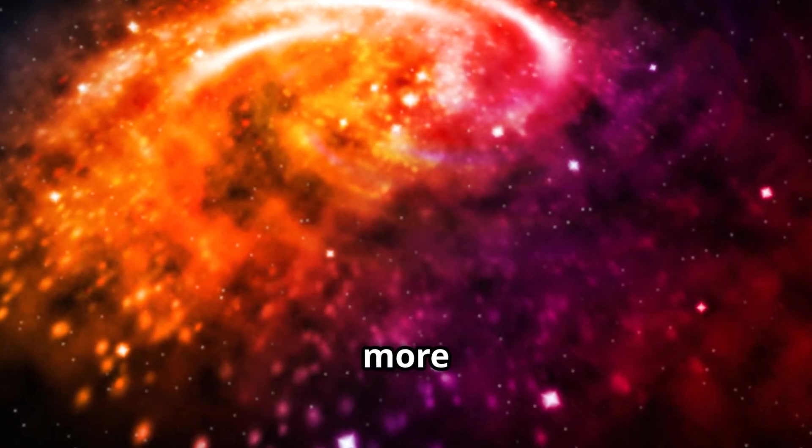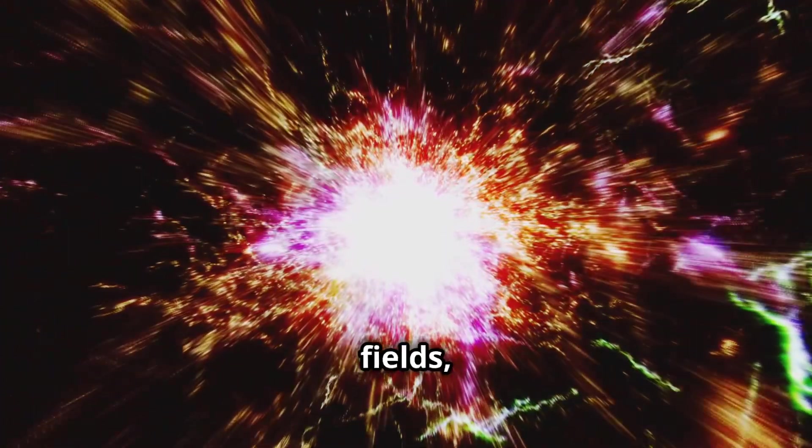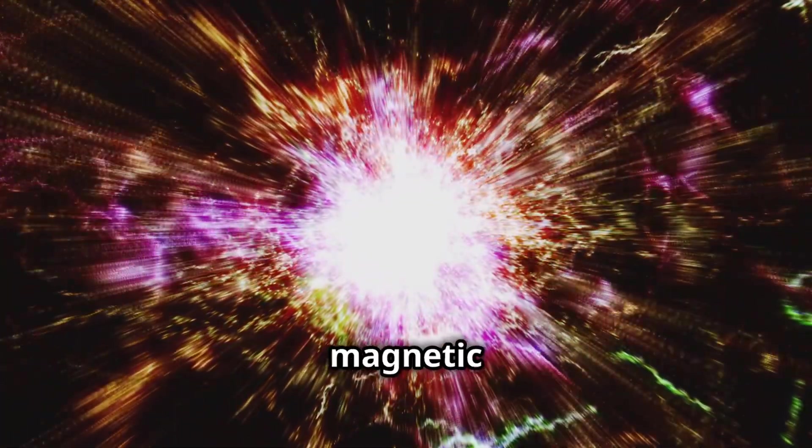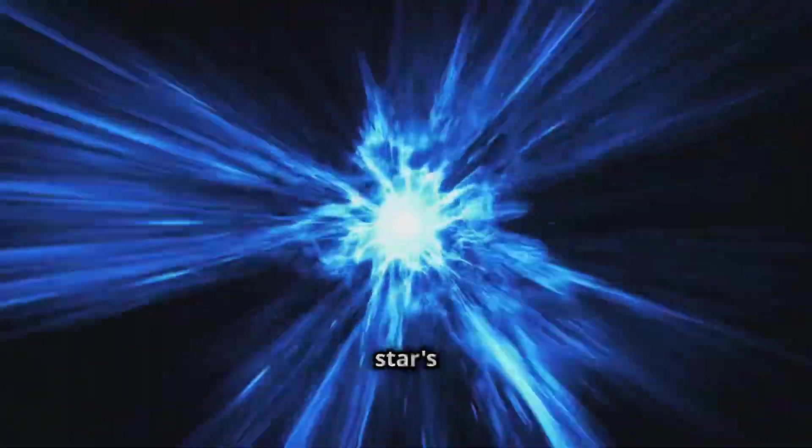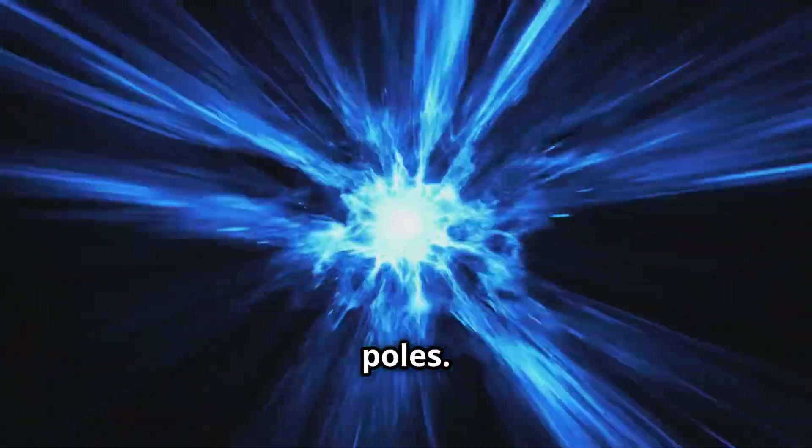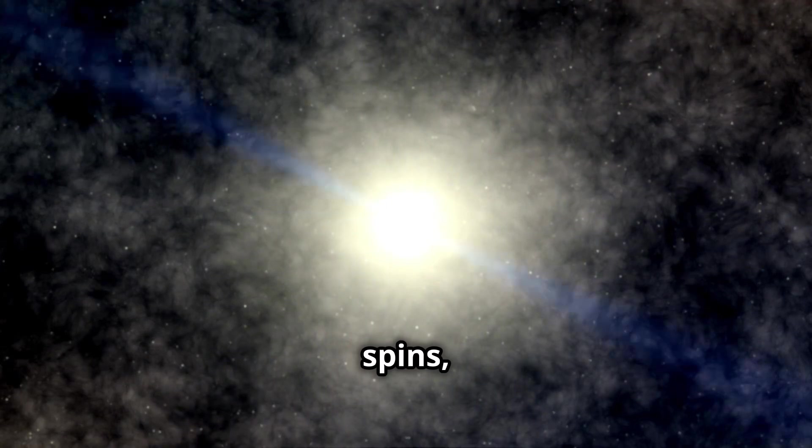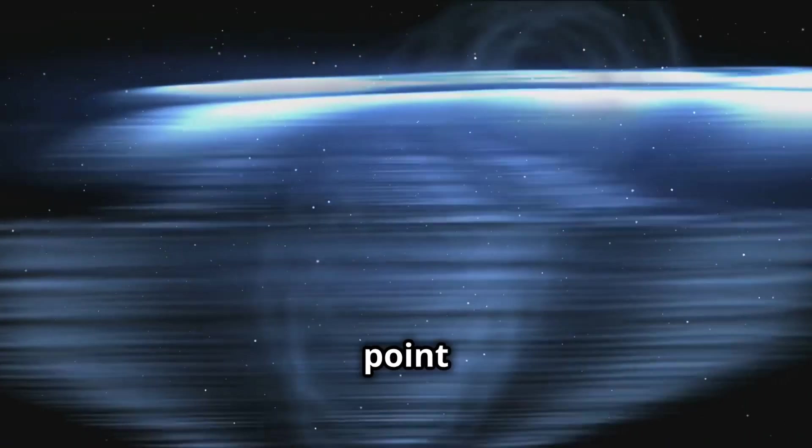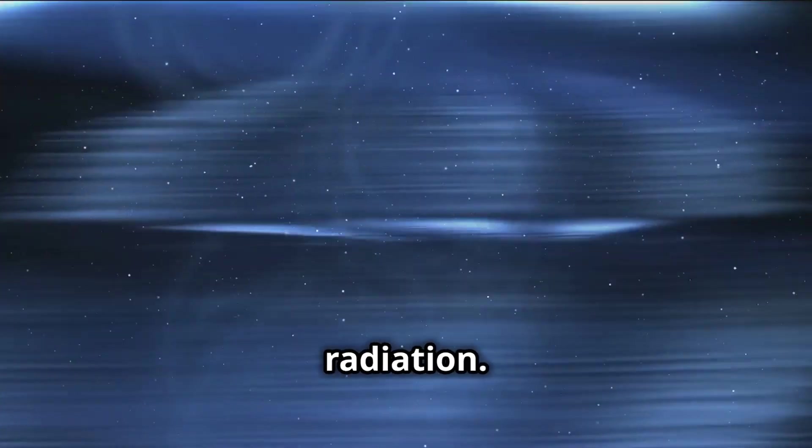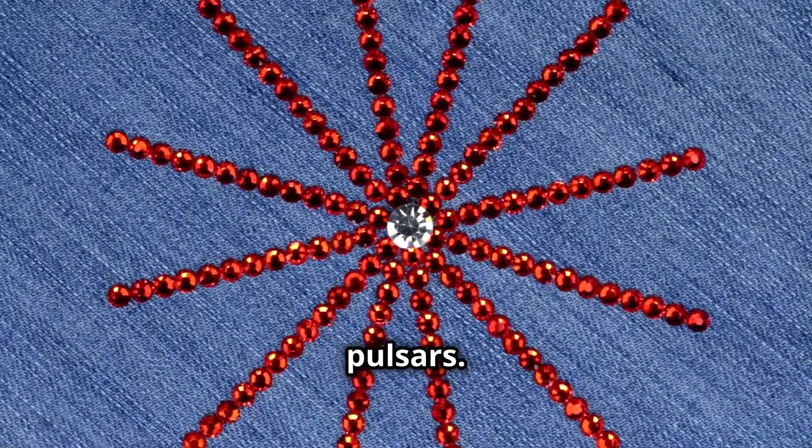And here's where things get even more interesting. Neutron stars often have intense magnetic fields, trillions of times stronger than Earth's magnetic field. These powerful fields channel radiation beams from the star's magnetic poles. As the neutron star spins, these beams sweep across space like cosmic lighthouses. If a beam happens to point towards Earth, we detect it as a pulse of radiation. These pulsating neutron stars are known as pulsars.